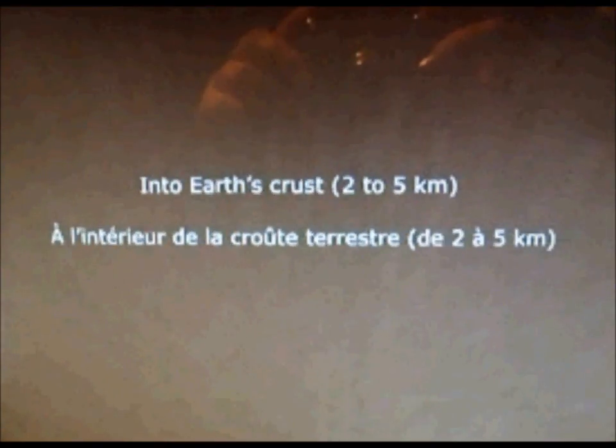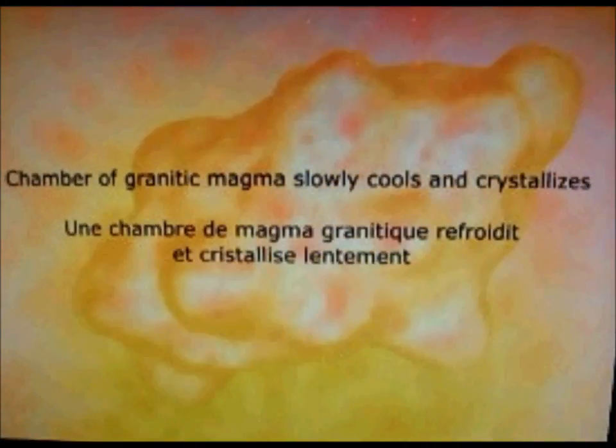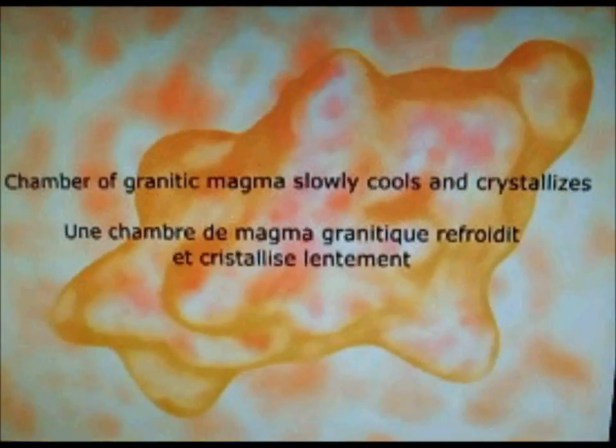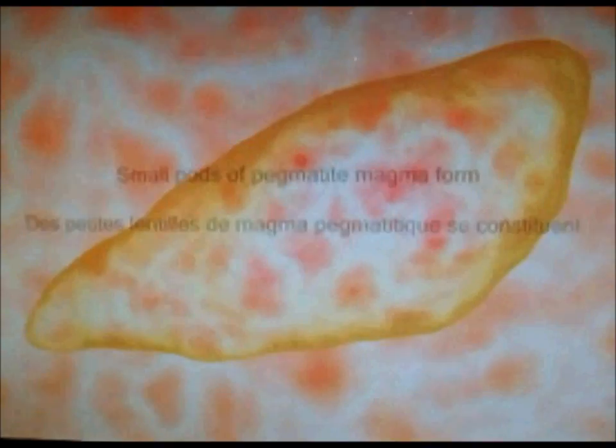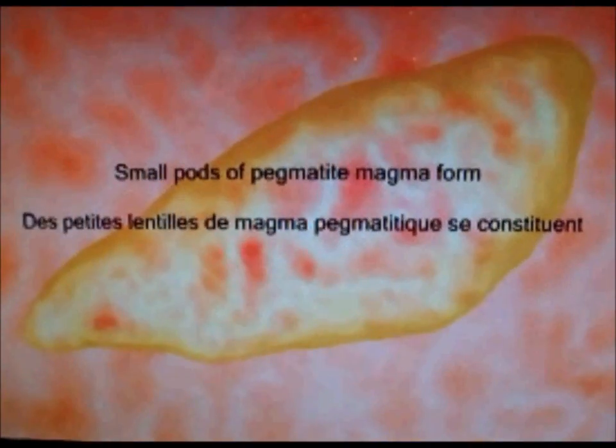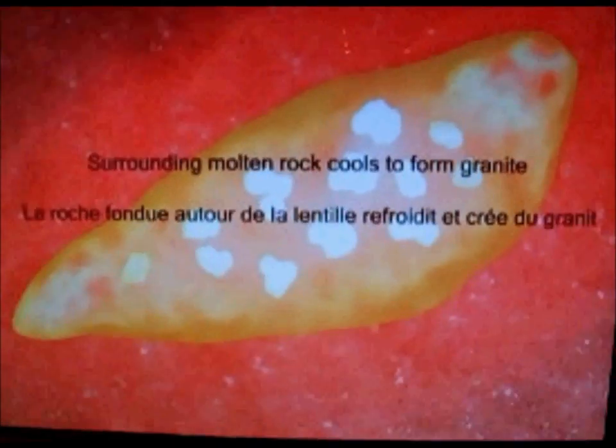Into the Earth's crust, 2 to 5 kilometers down, chambers of granite magma fully cool and crystallize. Small pods of pegmatite magma form.